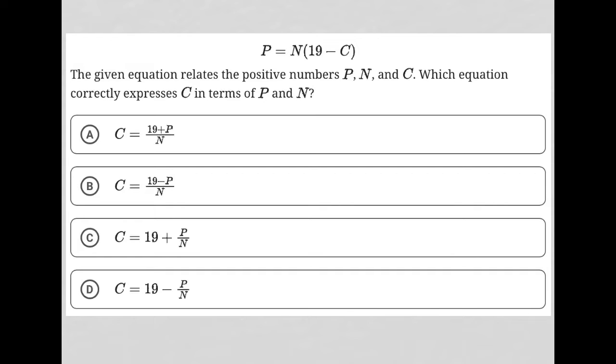This question starts off by providing us with this equation P equals N parentheses 19 minus C. The question goes on to say the given equation relates to positive numbers P, N, and C. Which equation correctly expresses C in terms of P and N?